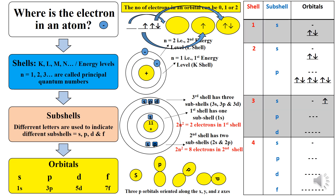So where are the electrons present in an atom? They are present in the shell, and within the shell they are present in the subshells, and within the subshells they are present in the orbitals. The electrons are finally housed in the orbitals — that is the final destination of an electron in an atom: atom, shell, subshell and orbitals.